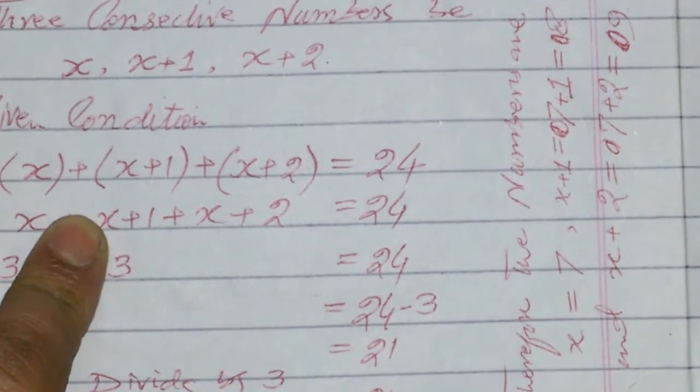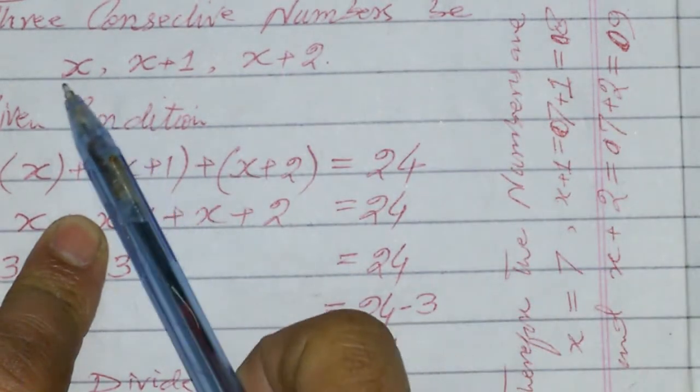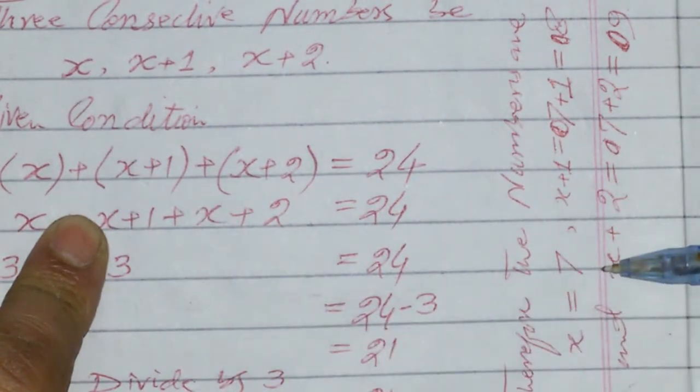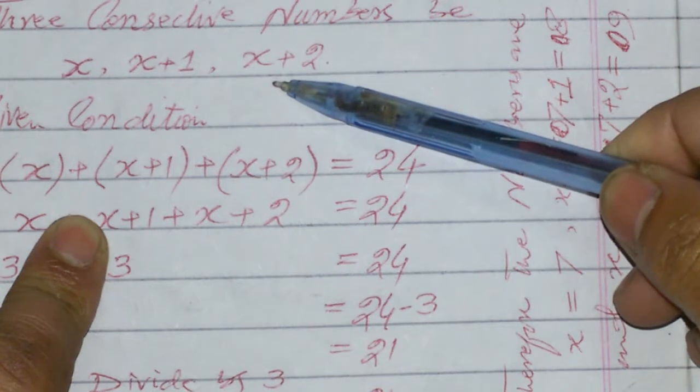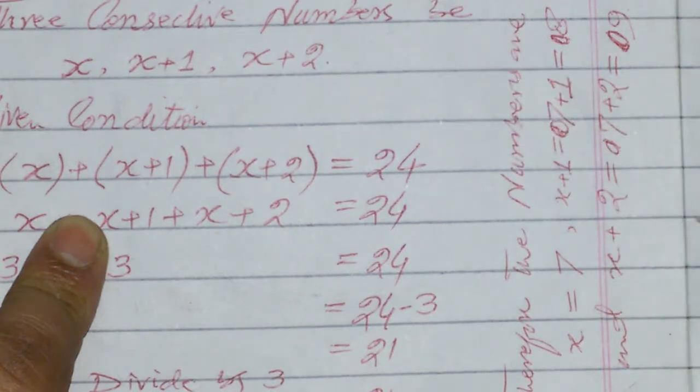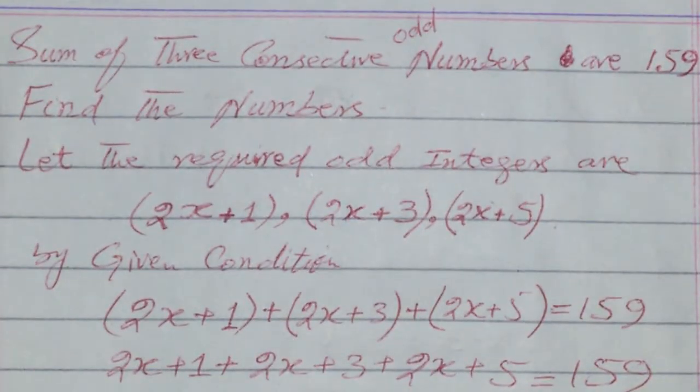Therefore the consecutive numbers are: x equals 7, the next number x+1 equals 7+1 equals 8, and the last number x+2 equals 7+2 equals 9. The consecutive numbers are 7, 8, and 9.